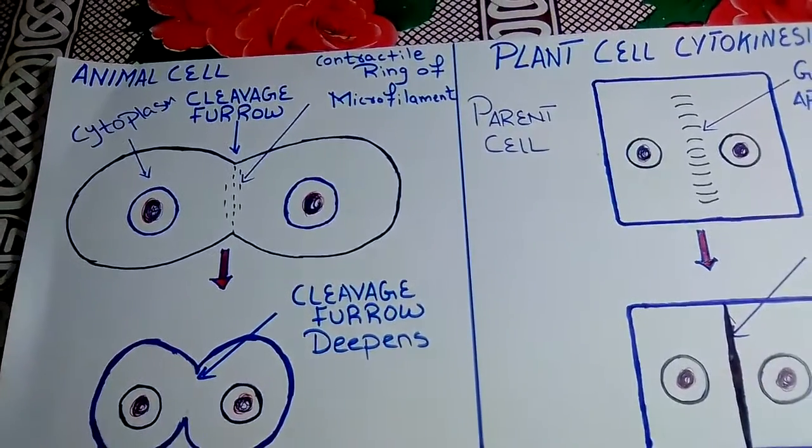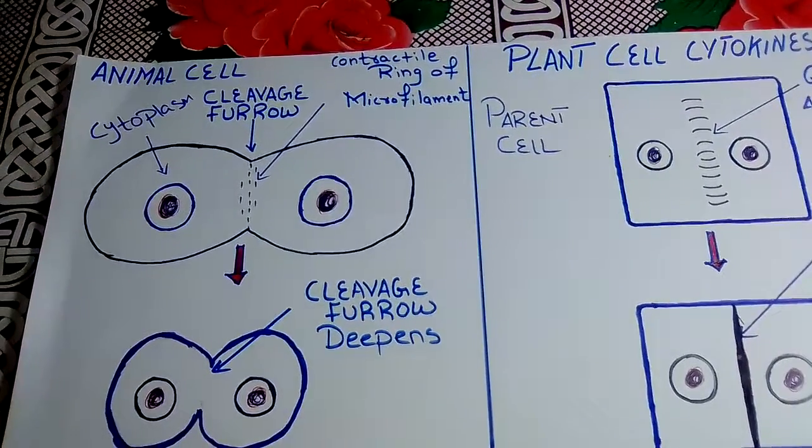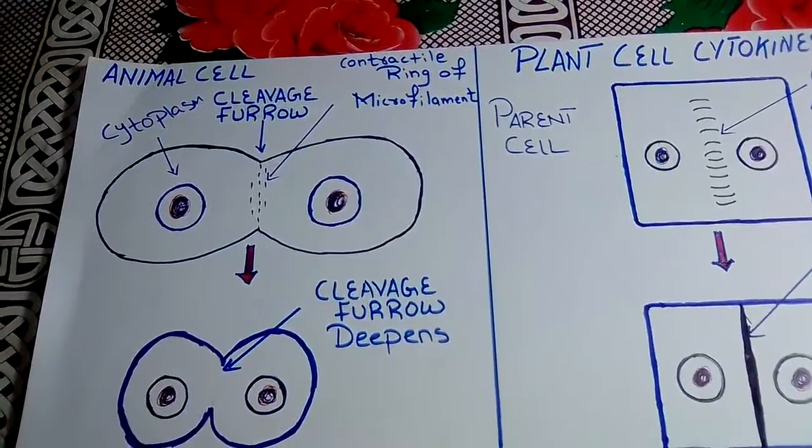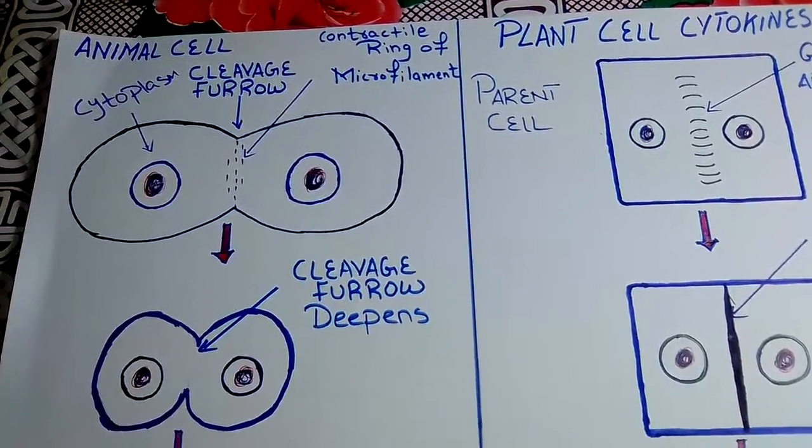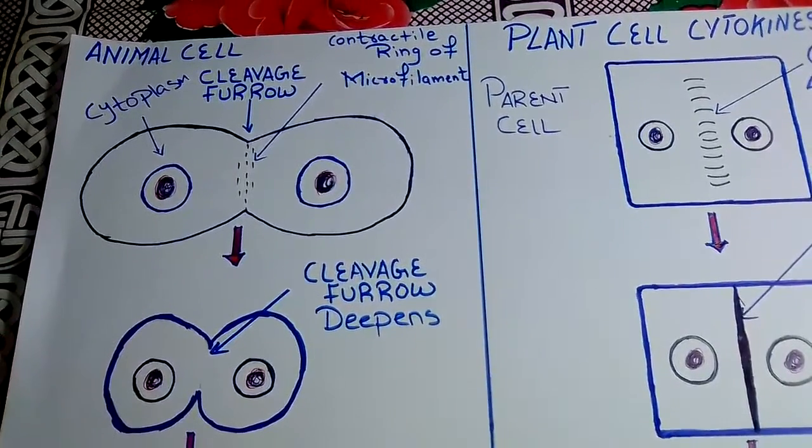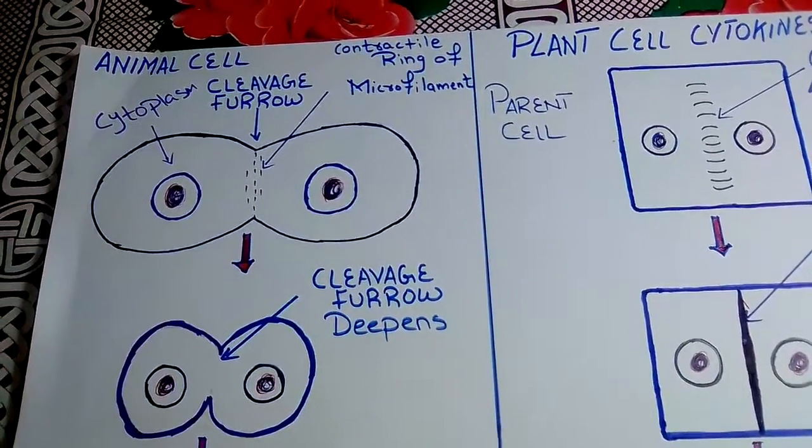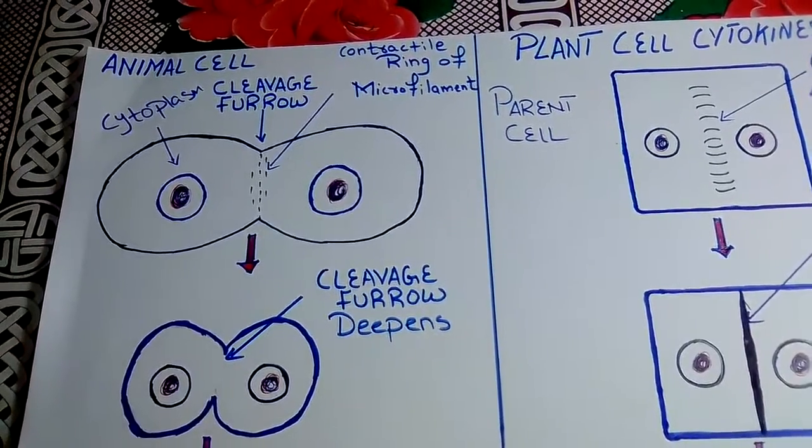Assalamu alaikum. In this video, I am going to explain the difference between cytokinesis of animal cells and plant cells. A cell, after completing its karyokinesis or mitotic phase, undergoes cytokinesis.